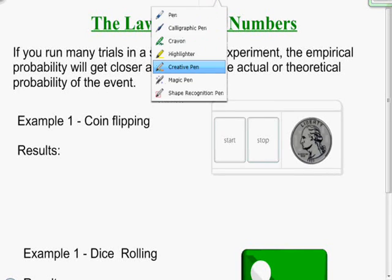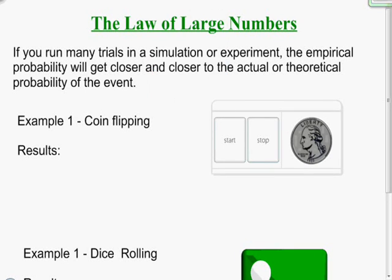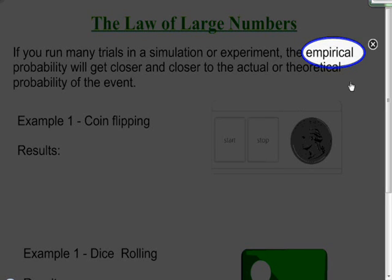There's two types of probability that I want to discuss very quickly here. Empirical probability is basically relative frequency for an experiment or a simulation that you may do. So if you repeat something over and over again and you are finding the relative frequency of that event happening,